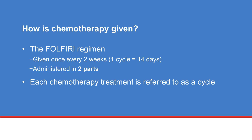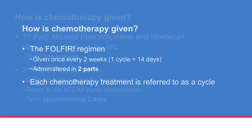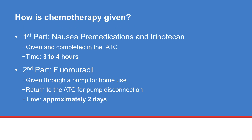Your chemotherapy is given once every two weeks. This two-week period is called a cycle. The first part of your treatment will be given in the ATC, which includes IV medicines to prevent nausea and vomiting and the first chemotherapy medicine, irinotecan. This will take approximately three to four hours. Once completed, the nurse will attach a pump containing fluorouracil to your central IV line. This pump continuously infuses chemotherapy over approximately two days in the convenience of a home setting. On the third day, you will return to the ATC to disconnect the pump.